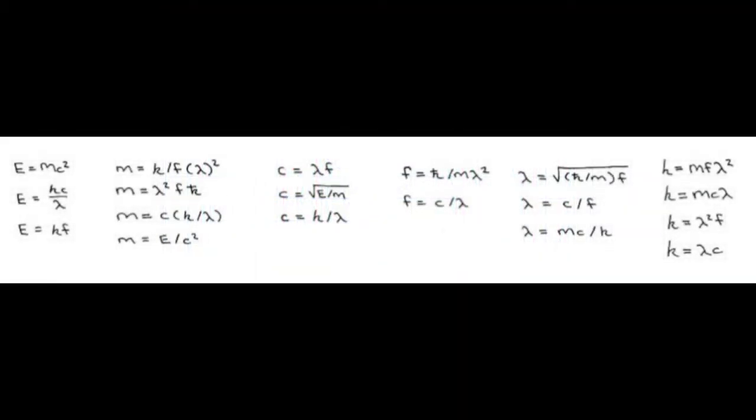One joule of energy equals one kilogram of mass traveling at a velocity of light speed squared, or 89 quadrillion, 875 trillion, 517 billion, 873 million, 681 thousand, 800 square meters per second squared, where the square of one second is one second.